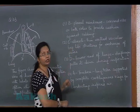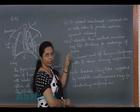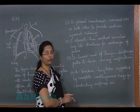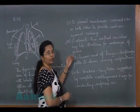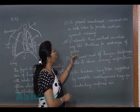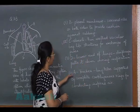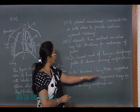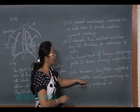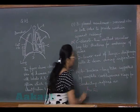Option 2: C is alveoli — correct identification. Thin-walled vascular bag-like structures for exchange of gases — this is the correct identification as well as the function. Option 3 states the lower end of the lungs, which is wrong — it is actually the diaphragm. Option 4: A is trachea supported by complete cartilage rings, which is wrong because these are incomplete rings. So the answer is option 2.